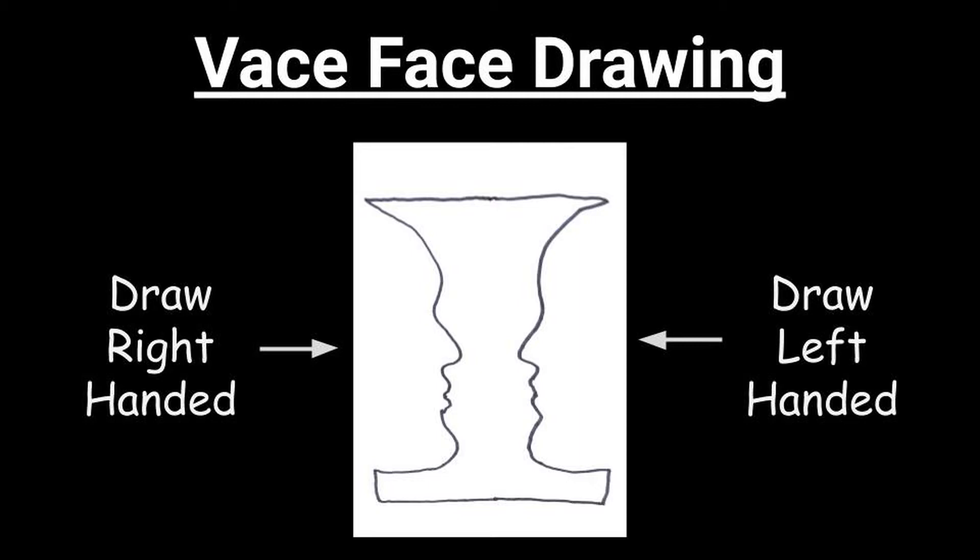On the left side, you're going to draw a silhouette of a face looking in with your right hand. Then you're going to switch over to the opposite side and draw with your left hand a face looking in. It'll be a little play with positive and negative space.